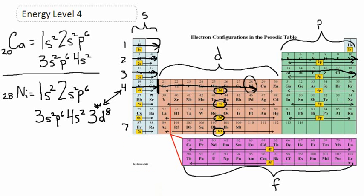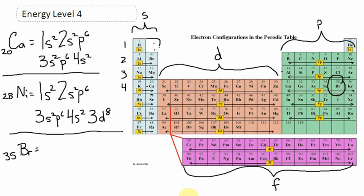Let's try another one. The last example we're going to do is bromine. Bromine is element number 35 — 35 protons, 35 electrons. Let's dive into bromine. The first two electrons go into the first energy level, the s orbital — it will hold two electrons. First energy level is filled up. The second energy level s orbital will also hold two electrons — one, two. Now we're going to fill up the second energy level p orbital, which can hold six electrons.